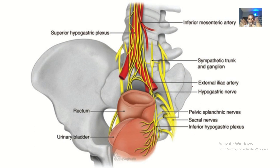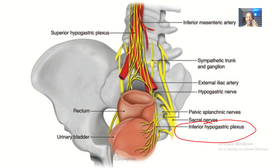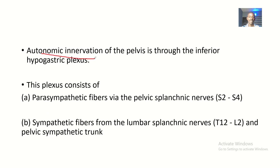There are so many nerves and arteries here, but I'd like to draw your attention to the inferior hypogastric plexus — that's the plexus that actually serves the autonomic innervation to the pelvis. So autonomic innervation of the pelvis is through the inferior hypogastric plexus, which is subdivided into the parasympathetic and the sympathetic.